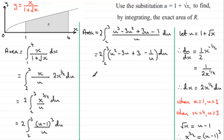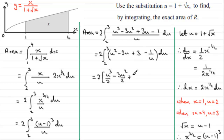Integrating term by term, we get 2 times: u cubed over 3, minus 3u squared over 2, plus 3u, minus the natural log of u — all evaluated between limits 2 and 3.